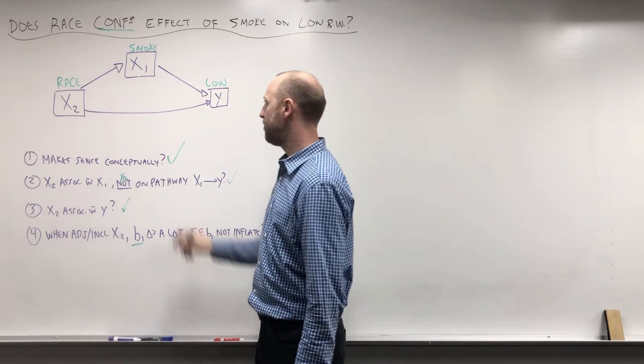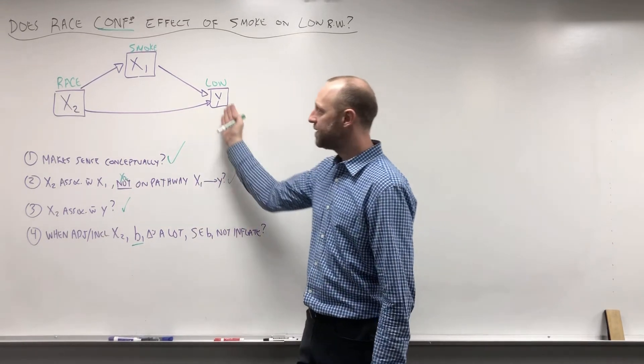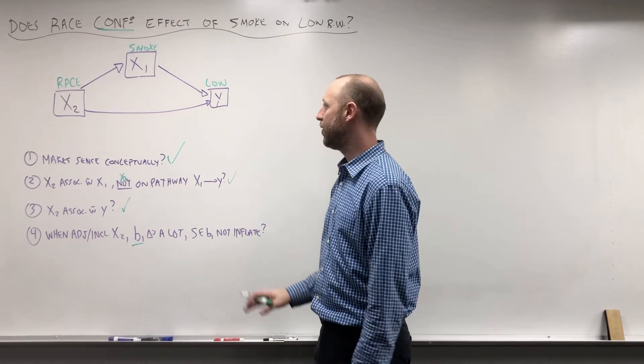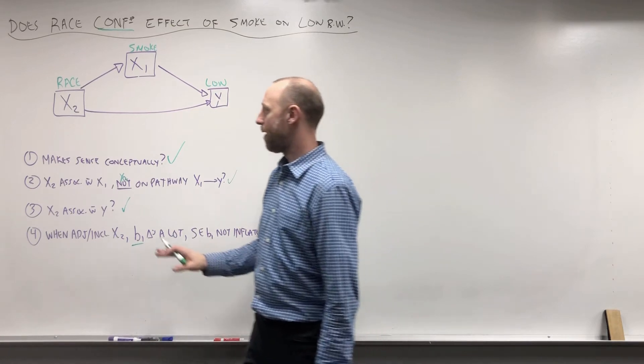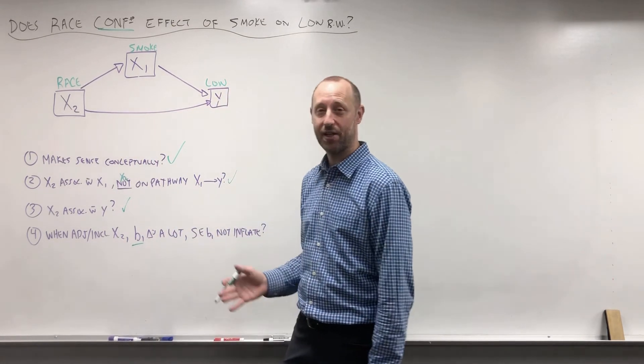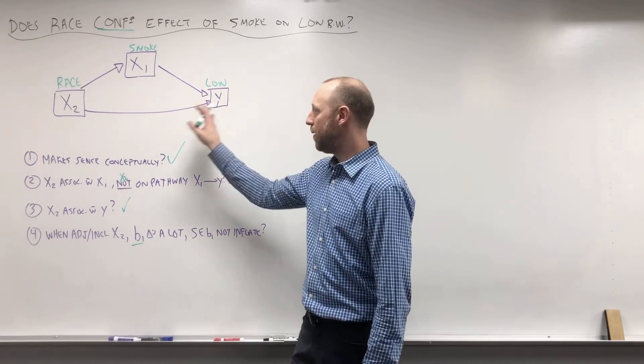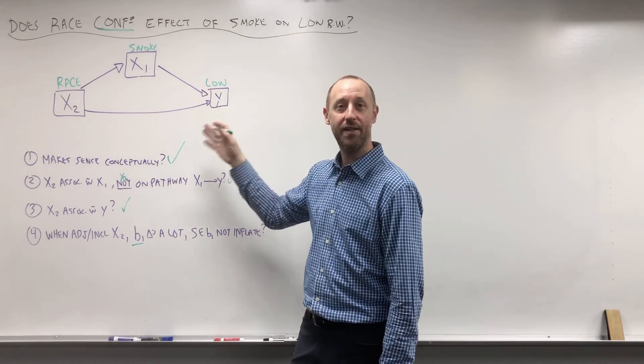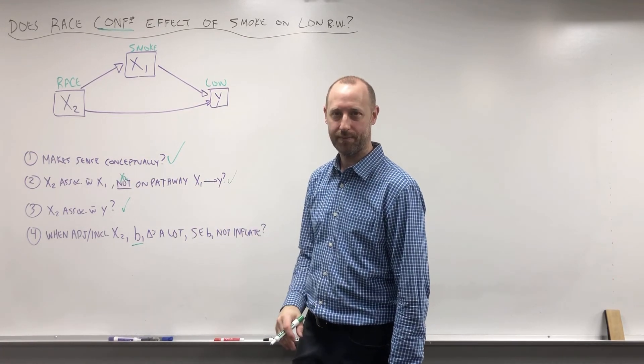So what I'm going to say for now, before we move on, is that I'd say conceptually race seems to make sense as a confounder, or at least our hypothesized relationships make sense that it could be a confounder. So let's explore how the associations between race, smoking, and low birth weight look in the data when we go into R. Stick around, guys. There's more to see, and please stay safe.